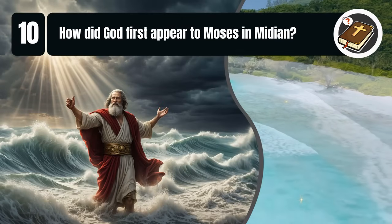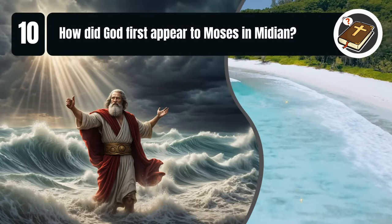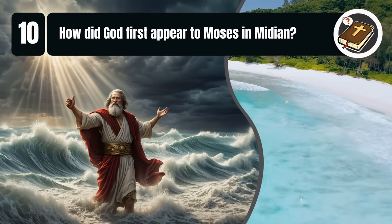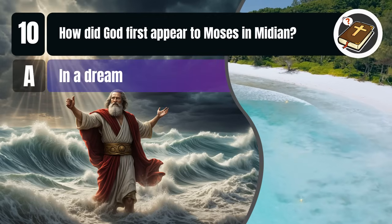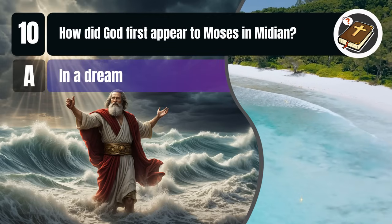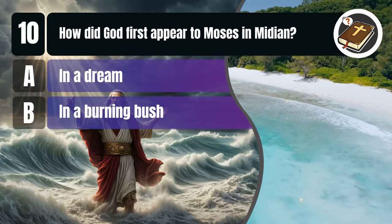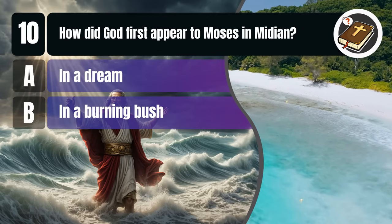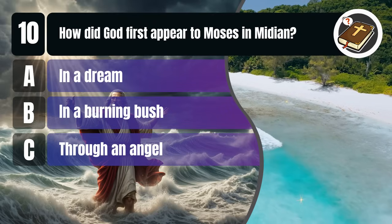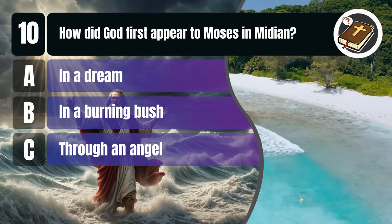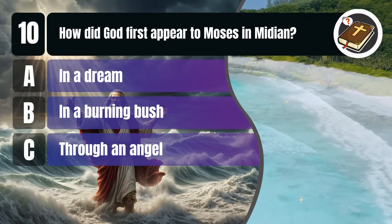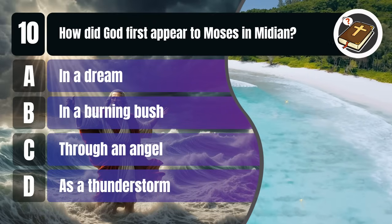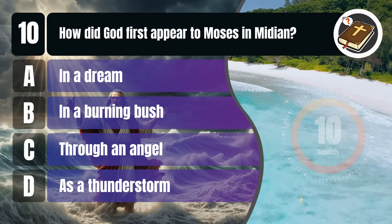Question 10. How did God first appear to Moses in Midian? A. In a dream, B. In a burning bush, C. Through an angel, D. As a thunderstorm. You get 10 seconds.